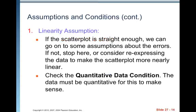If the scatter plot is straight enough, we can go on to some assumptions about the errors. If not, stop here or reconsider re-expressing the data to make the scatter plot more nearly linear. Now, we skipped chapter 10 that talks about re-expressing data and we're going to go to that later. This is actually the last chapter we have to study if we go sequentially, but we skipped 10 so we're still going to go to that.